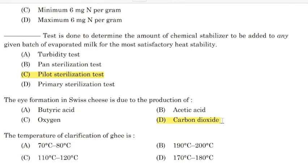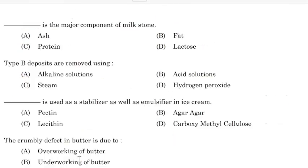The temperature of clarification of ghee is — Correct answer: Option C — 110 to 120 degrees Celsius. Blank is the major component of milk ash —